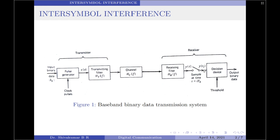Finally, the sequence of samples Y(t_i) is used to reconstruct the original data sequence using a decision device that compares the sample amplitude with a predetermined threshold. Assuming symbols 1 and 0 are equally likely, the optimal threshold is halfway between the two representation levels. If the sample amplitude exceeds the threshold, a decision is made in favor of symbol 1; if it is less, in favor of symbol 0; and if it equals the threshold exactly, a decision is made by flipping a fair coin.